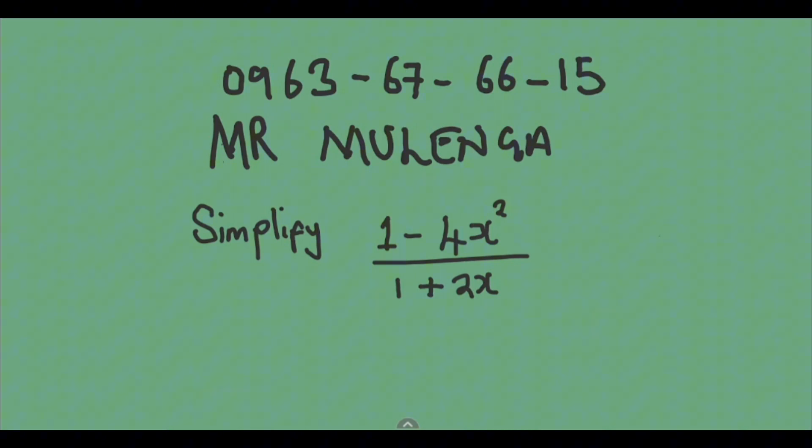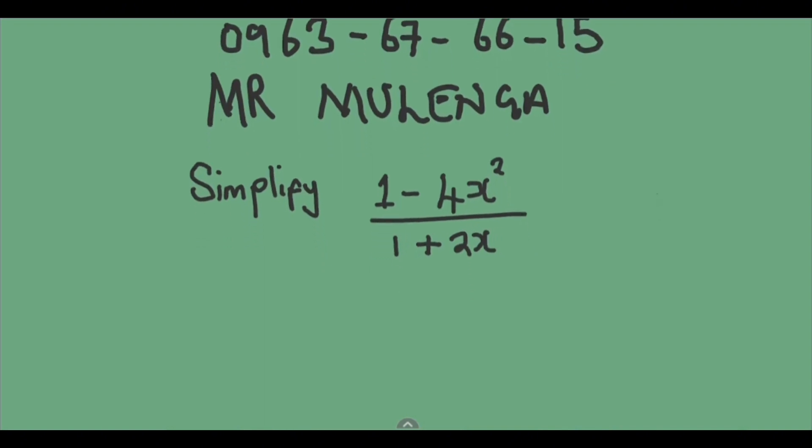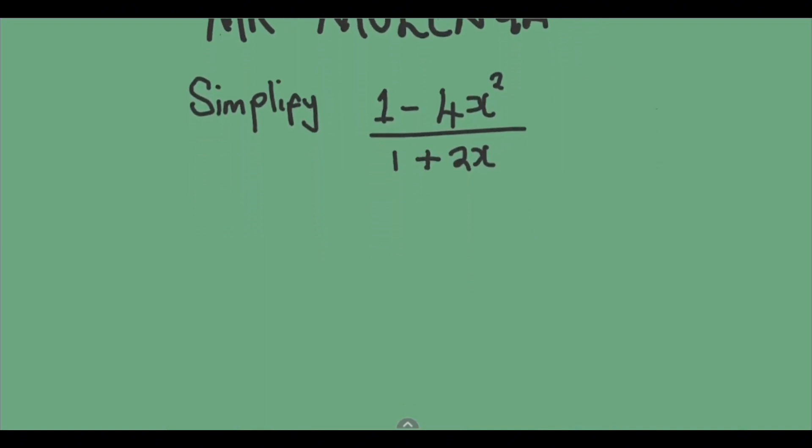Simplify 1 minus 4x squared over 1 plus 2x. So how can we simplify this question? The first thing that we are going to do, we are going to rewrite the question.